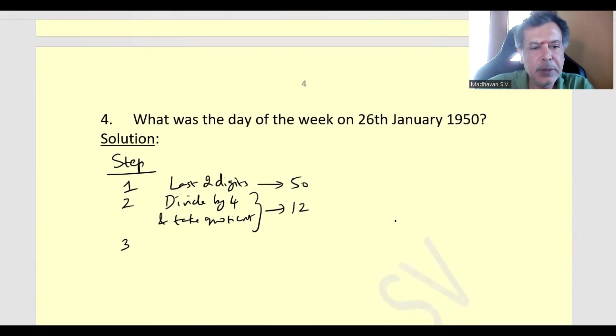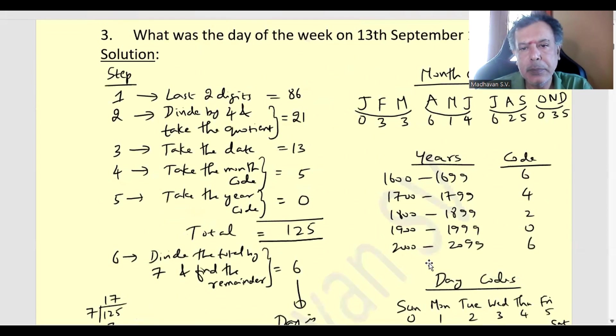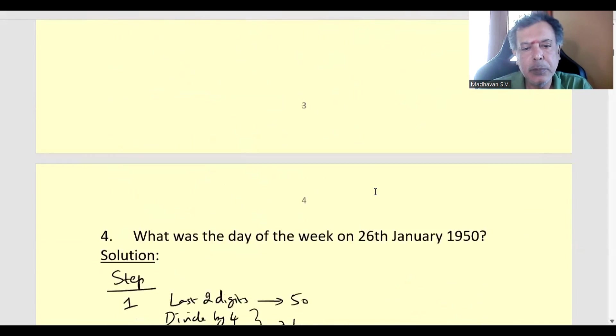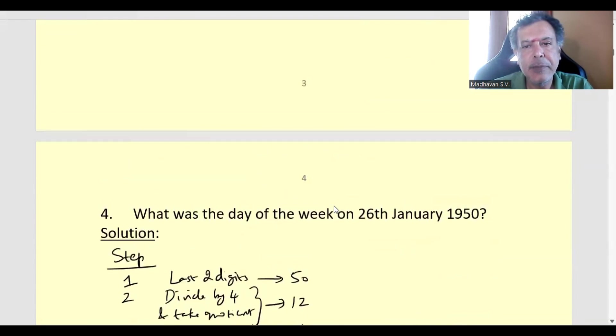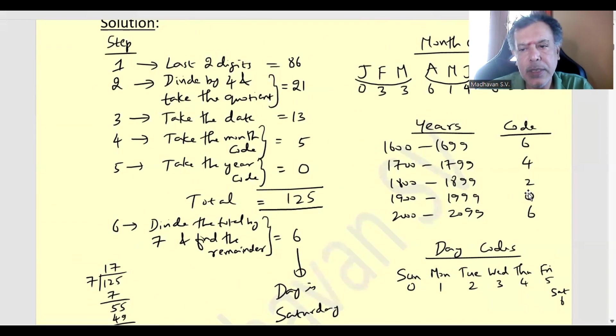Then third step, take the date. Date is 26. Then take the month code. Month is January, the code is 0. Then fifth one, take the year code. The year is 1950 and for that the code is 0 again.